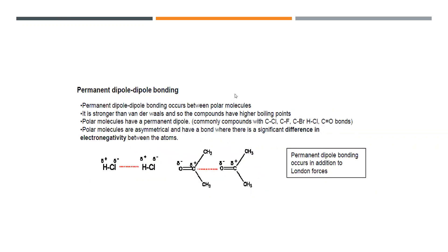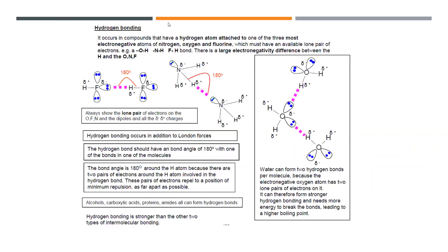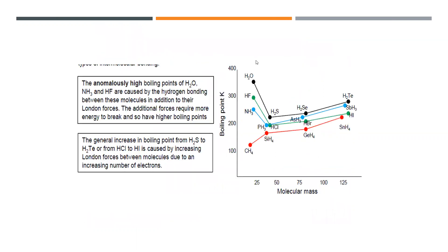When hydrogen forms a bond with more electronegative elements such as oxygen, nitrogen, or fluorine, it appears that hydrogen almost loses its electron to the more electronegative element. So the hydrogen is attracted towards another molecule's lone pair, and this attraction is known as the hydrogen bond. The bond angle is always 180 degrees.